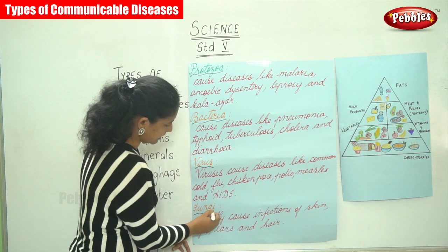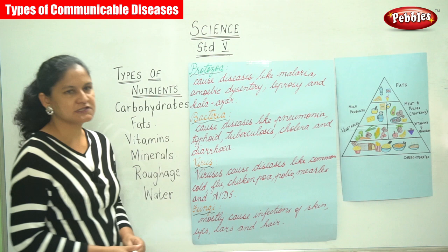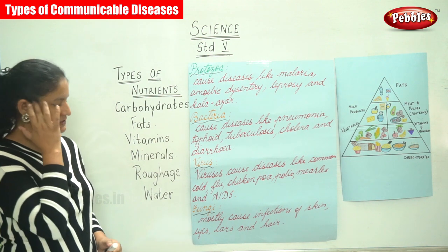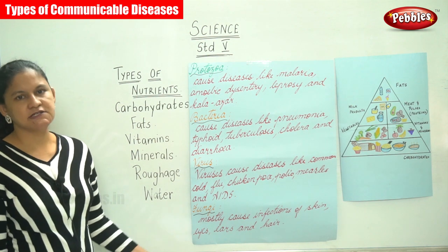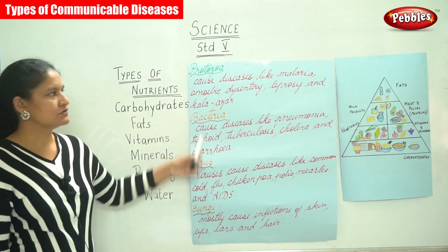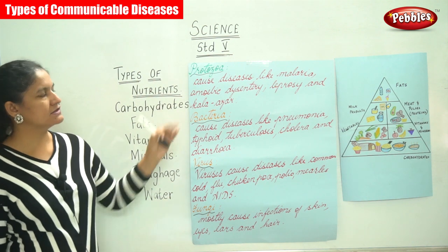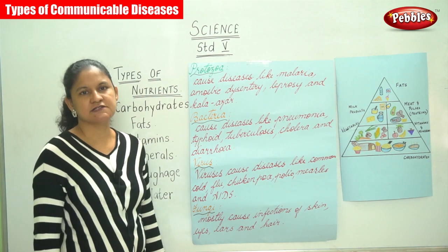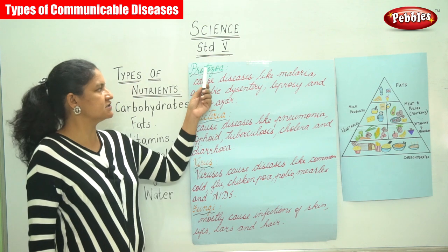The next type of germ is fungi. Fungi mostly causes infections of your skin, eyes, ears, and hair. These are all the germs and the types of diseases that they cause.